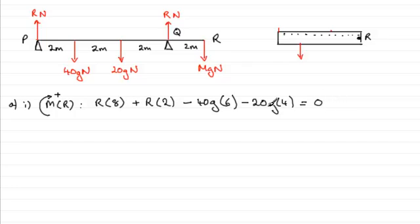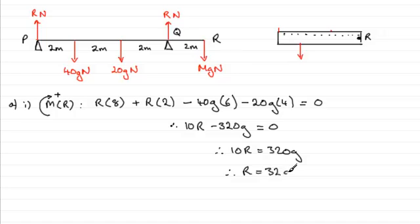So all we've got to do now is just solve this equation for R. So we've got 8R plus 2R here, which is going to be 10R. And then we've got minus 40g times 6 and minus 20g times 4, which comes to minus 320g, and that equals zero. So if we add 320g to both sides, you've got 10R equals 320g. And you could divide through by 10, and you get R equals 32g Newtons.